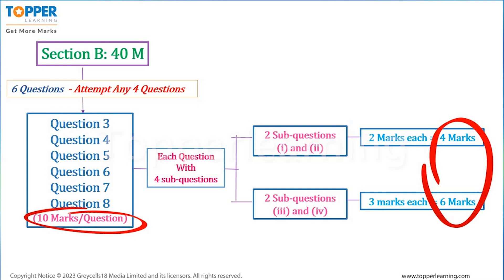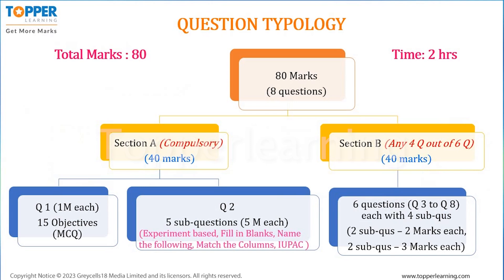All the questions that would appear in Section B will be short-answer type of questions. The final flow of the paper pattern for the chemistry paper: total 80 marks, 2 hours duration, 2 sections A and B.